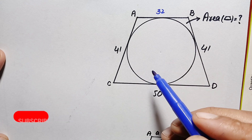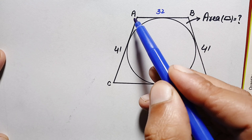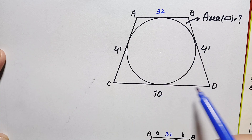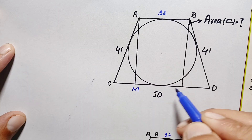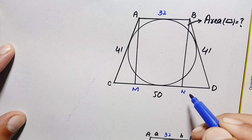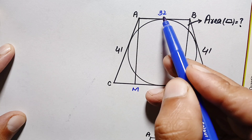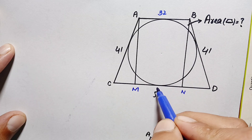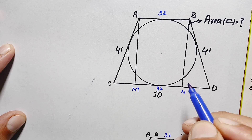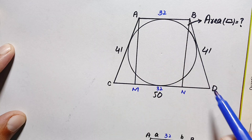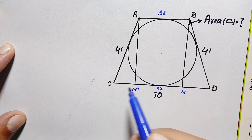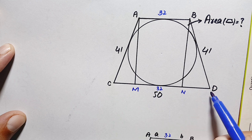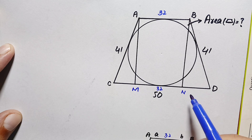Next we find the height of the trapezoid. We draw two perpendiculars from points A and B down to side CD, meeting it at points M and N respectively. Since AC equals BD, this is an isosceles trapezoid. Side MN equals AB which is 32 units.